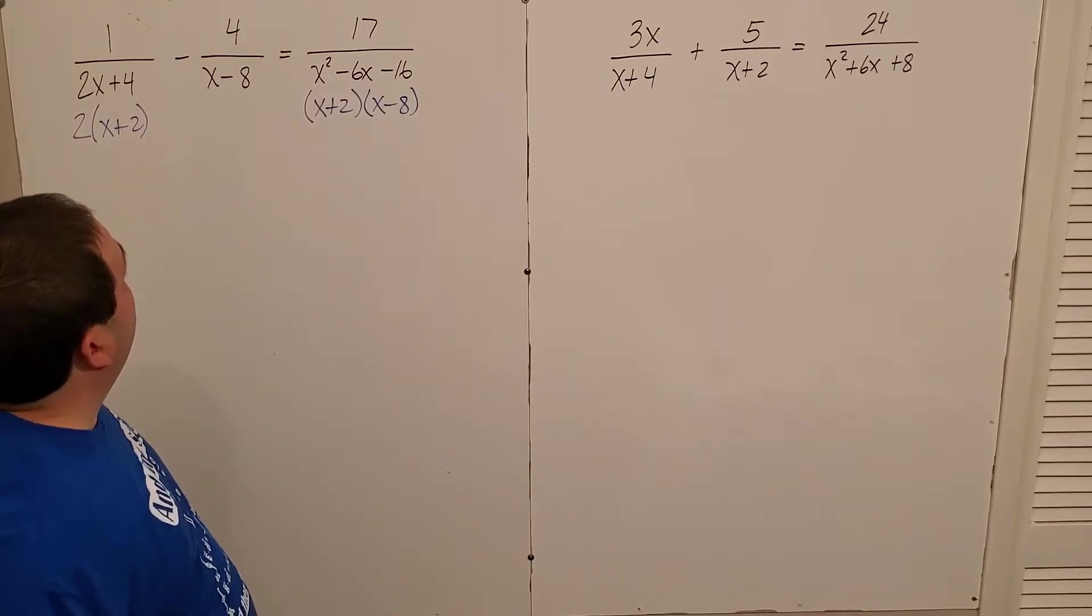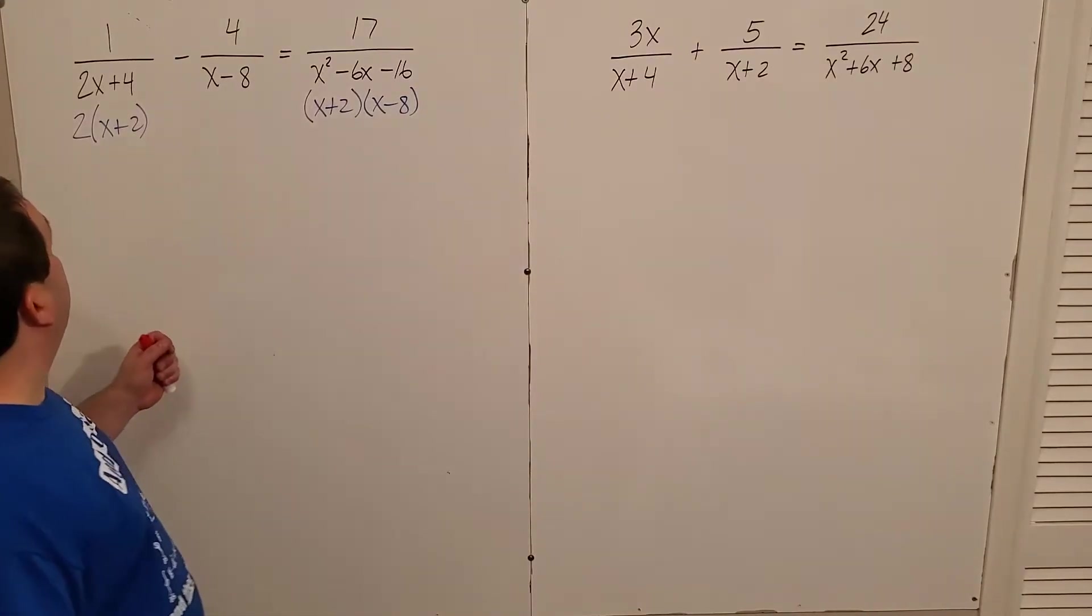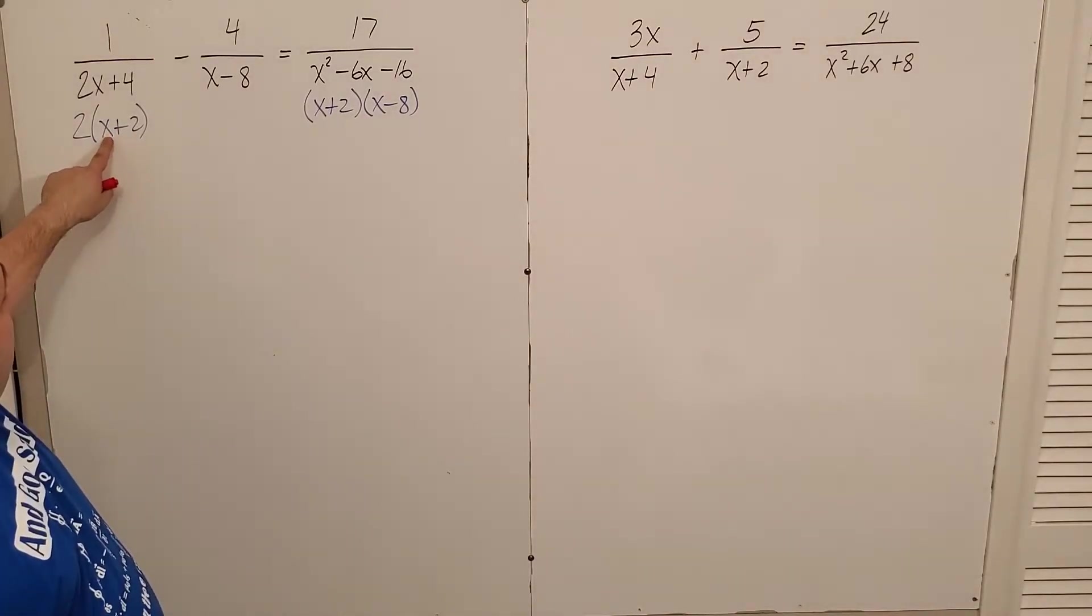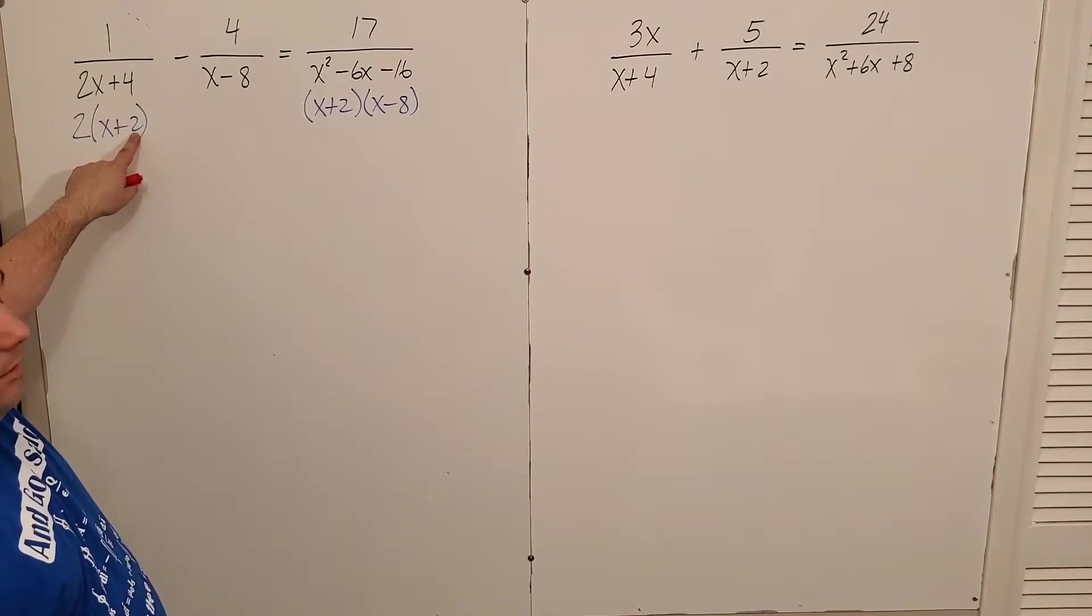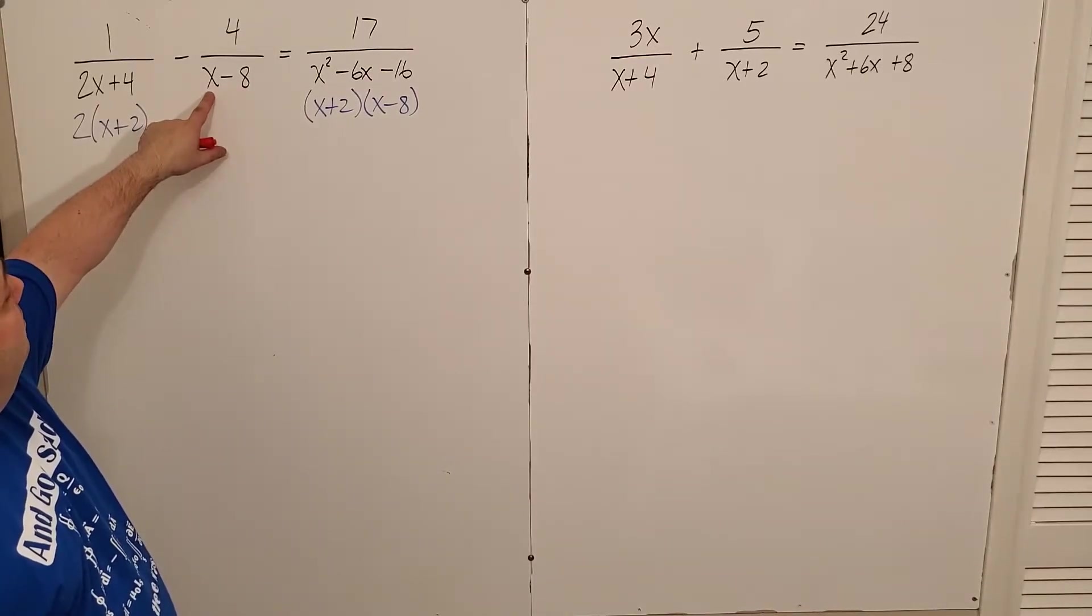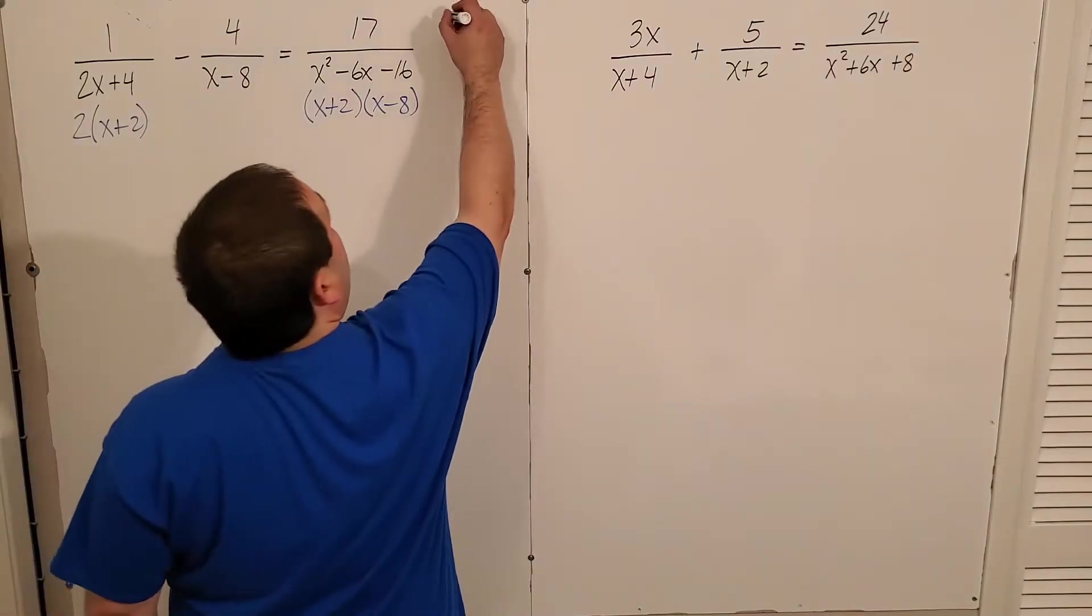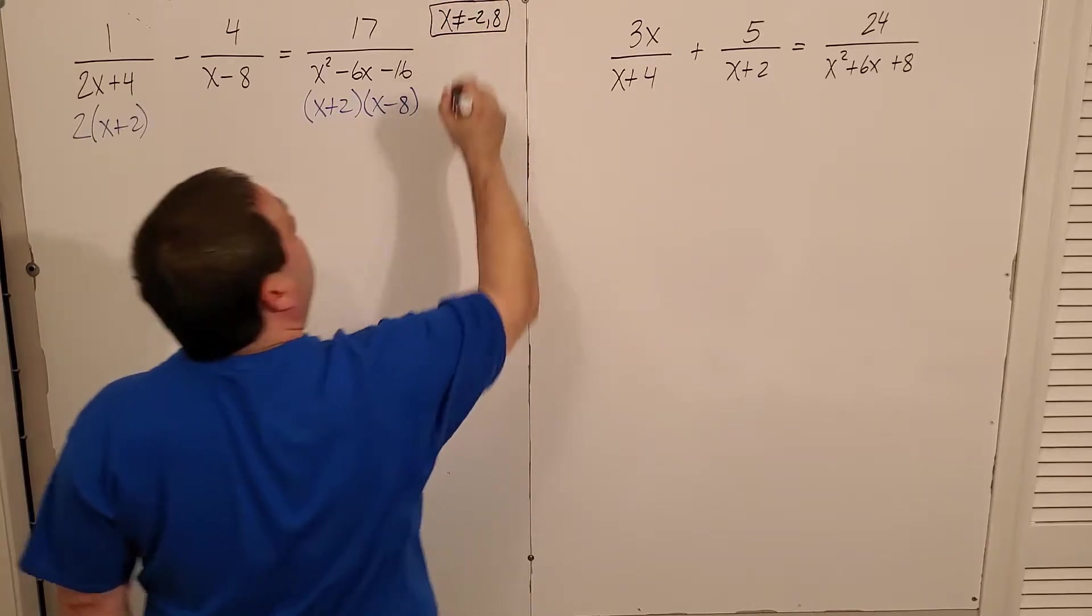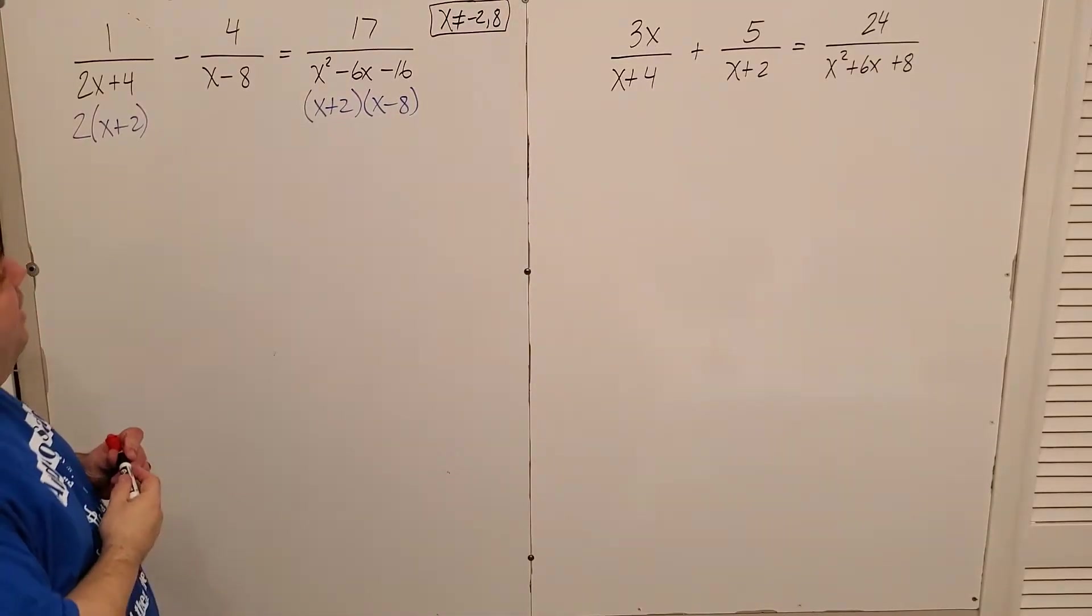So now that I've factored everything out, I can notice that here, if x were negative two, negative two plus two would be very bad, right? That would be zero. Also, eight minus eight would be bad. So x can't be negative two or eight. We have to remember that for that one.